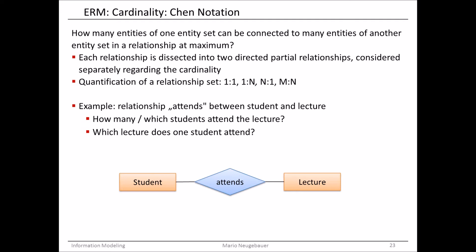To express the quantification of such a relationship set, we have three — or actually four — different possibilities. The first one is one to one. The second one is one to n. The third one is the same as the second but in the other direction, n to one. And the last one is m to n.